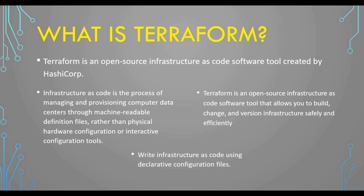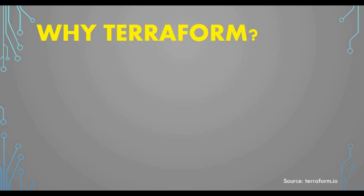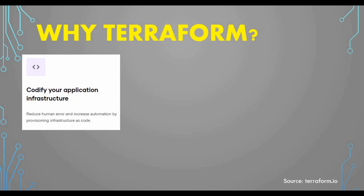You write this configuration as code using a declarative configuration file. The Terraform config file contains complete information about what infrastructure you want to deploy. Now let's see why Terraform. One key benefit is it allows you to codify your application infrastructure, which reduces human errors and increases automation.